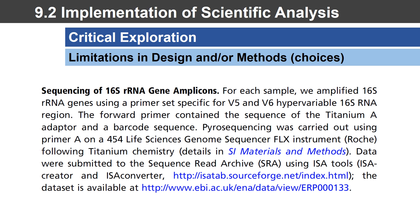Moving to the next section: 16S sequencing for rRNA gene amplicons — a very important methodological choice. In the world of microbial sequencing, there are two predominant approaches. The 16S approach targets a region that all microbes have, containing both conserved regions (similar for every microbe) and variable regions that make each microbe unique — those variable regions serve as barcoding regions to tell who's who.